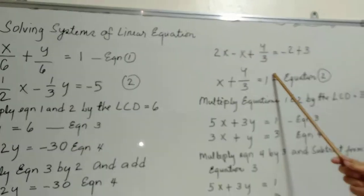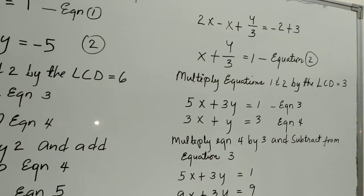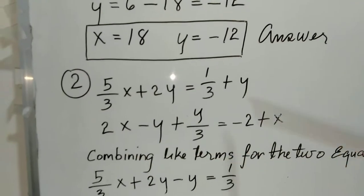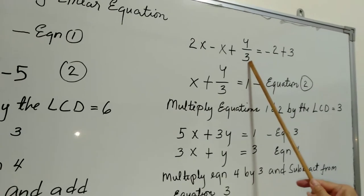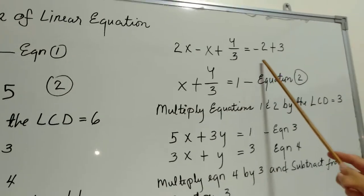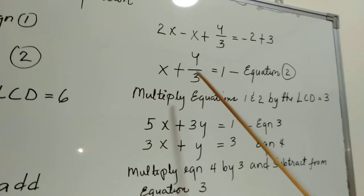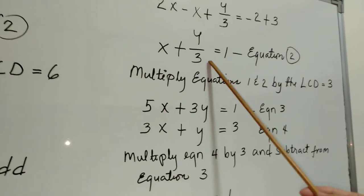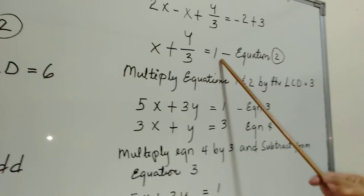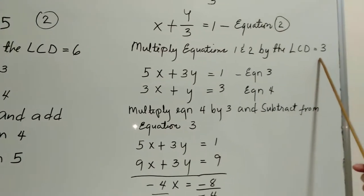For equation 2, we transpose x from the right side to the left side, giving us 2x minus x plus y over 3 equals negative 2 plus 3. Simplifying, 2x minus x is x, and negative 2 plus 3 is 1, so equation 2 becomes x plus y over 3 equals 1.